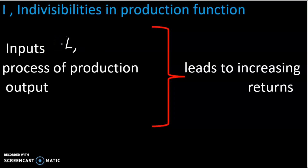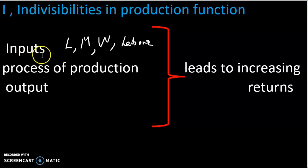The inputs in production include: land input, machinery input, wealth input, labor input, and equipment inputs. Production is available only when all the inputs are available together.